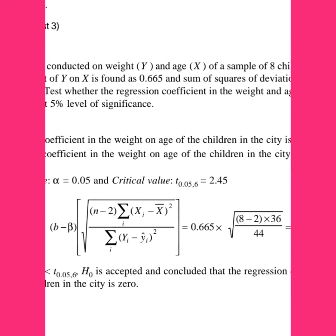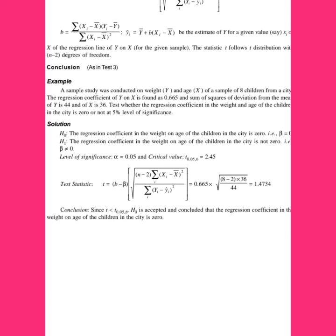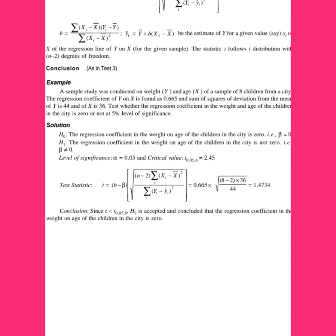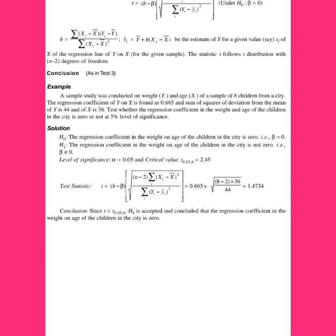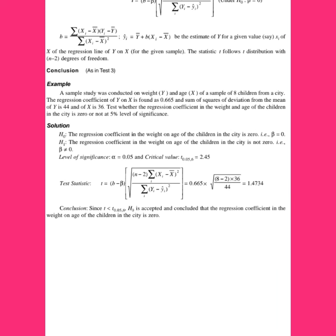The critical value from the table at n minus 2 — that is 8 minus 2 equals 6 degrees of freedom — is 2.45. For the test statistic, we calculate: sample regression coefficient minus population beta, times radical of n minus 2, with summation of (Xi minus X-bar) squared over summation of (yi minus y-bar) squared. Using the given values, the calculated t-value is 1.47.